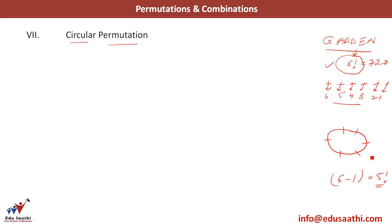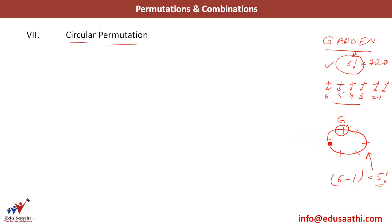Why is the answer 5 factorial for the circular case but 6 factorial for the linear case? Listen carefully. For example, I place G at any place in the circle. If I ask you where I have placed G in this circle, can you give me an answer? No, because in a circle, every point is symmetric.